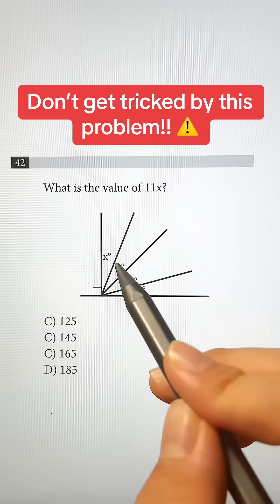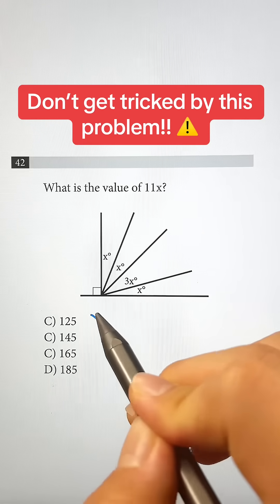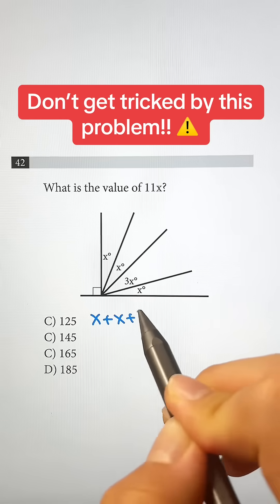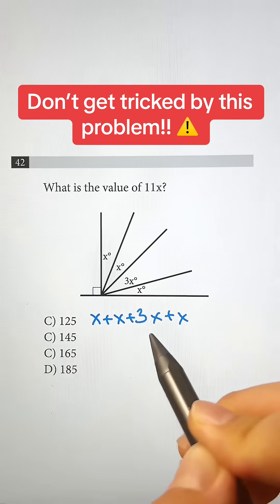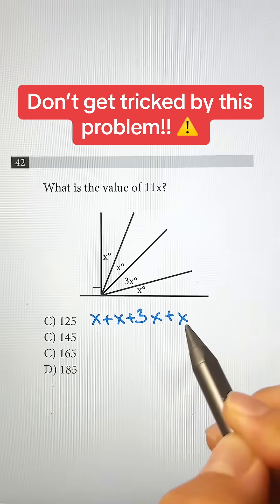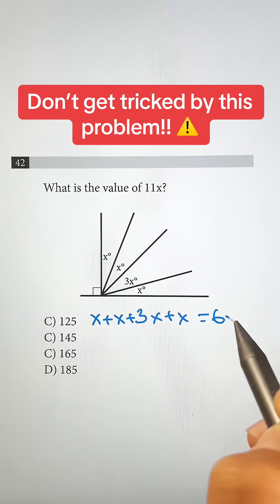What is the value of 11x? To solve that, we're going to have to add up everything first. We have x plus x plus 3x plus x, which is 1, 2 plus 3 that's 5, plus 1 more that's 6, which is equal to 6x.